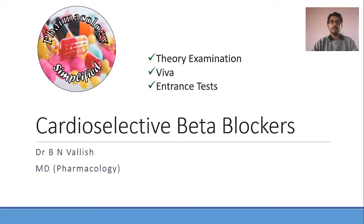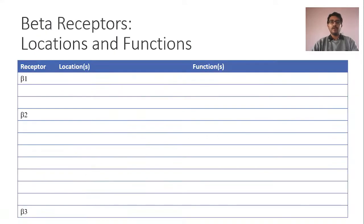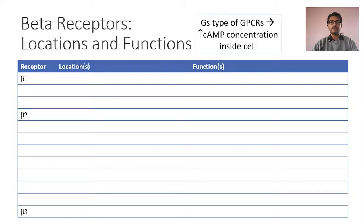Before we understand what cardioselective beta blockers are, we have to review the locations and functions of various beta-adrenergic receptors. Remember, all beta-adrenergic receptors are GPCRs — specifically, they are Gs-type GPCRs. The S stands for stimulation. Gs-type GPCRs upon activation by the agonist are going to stimulate an enzyme called adenylyl cyclase, which converts ATP into cyclic AMP.